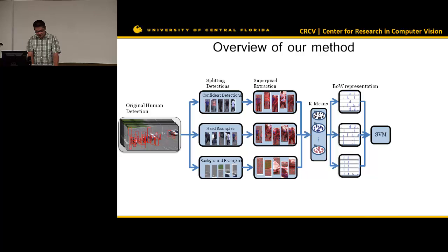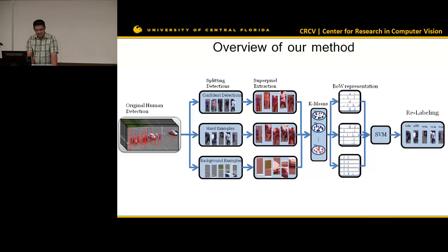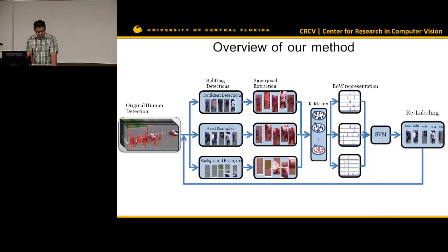We put all of these into an SVM and do prediction of hard examples. We can label these hard examples — they have a different score now — and then move some of the hard examples to other groups. We do this iteratively to refine the detection.